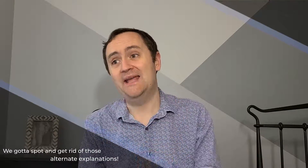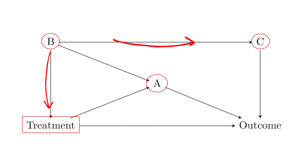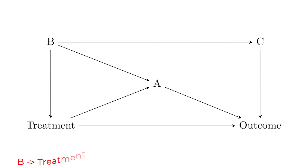The diagram will tell us exactly why those two variables might be related to each other. For example, one reason why treatment and outcome are related is that variable B causes treatment, and B also causes C, which causes outcome. So B causes treatment and B also influences the outcome. That is a causal path we can walk along that explains why we see a relationship between treatment and outcome. When we're identifying our causal effect, we need to look at what else is on the diagram so we know what we'll need to handle in our identification scheme.